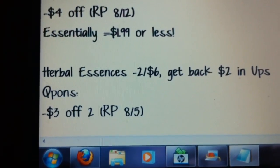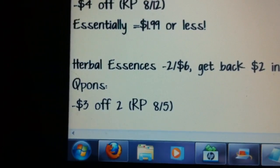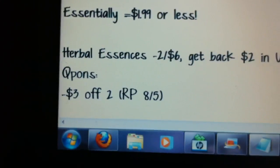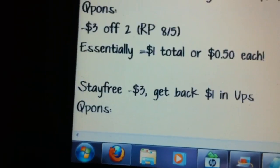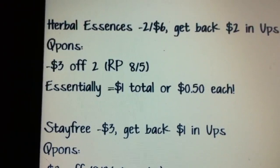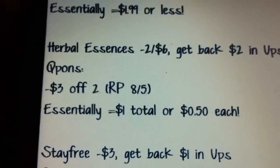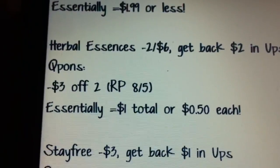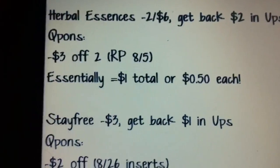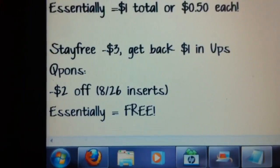The next deal is on Herbal Essence hair care — it's two for $6 and you get back $2 in UPs. The coupons we have are $3 off two from the August 5th Red Plum, so essentially it'll be $1 for both bottles, or 50 cents each. I'm totally stocked on hair care but I wanted to throw it in here because it is a great stock-up price.